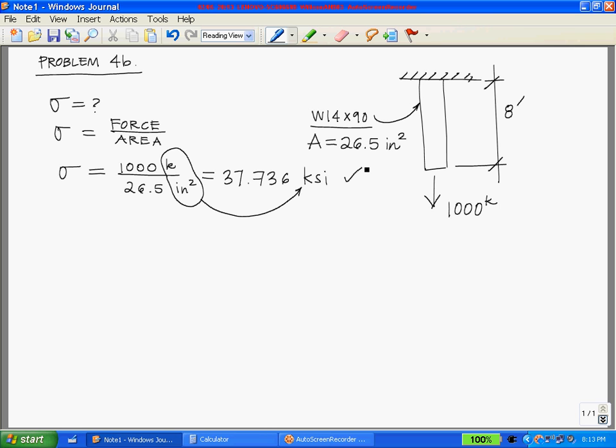The problem also asks us to calculate the change in length. The variable we use for change in length is delta L. Anytime you're dealing with these problems with a steel member that is subjected to an axial force, we basically just have three equations or three tricks up our sleeve.